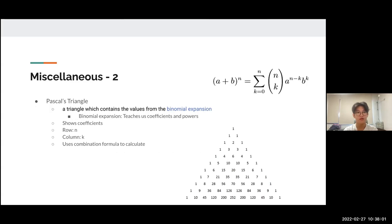Miscellaneous subtopic two is Pascal's triangle. It's a triangle which contains values from binomial expansion, as I said before. It teaches us coefficients and powers. These numbers represent the coefficients. Each row is represented by n, and each column is represented by k. It uses the combination formula to calculate.